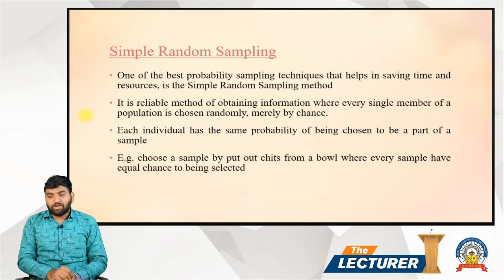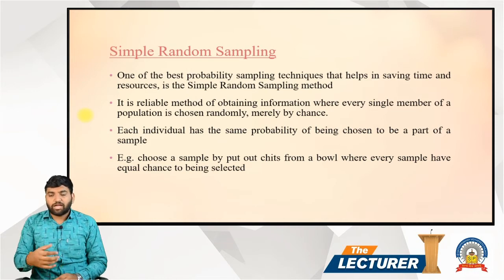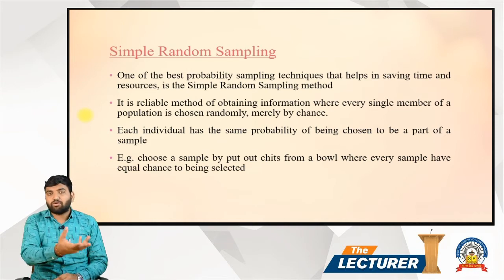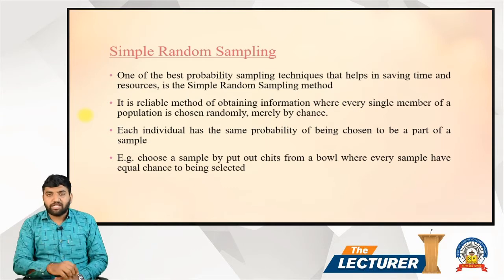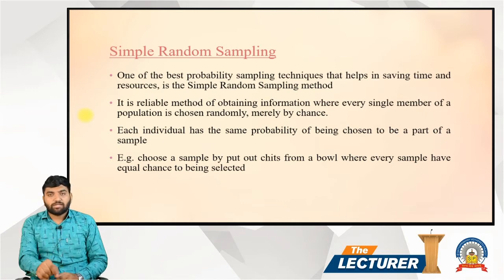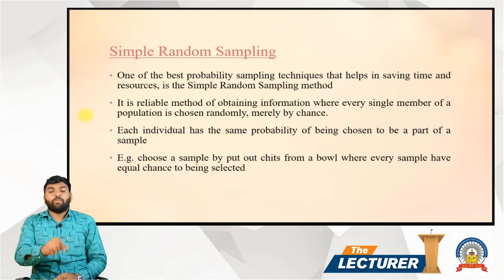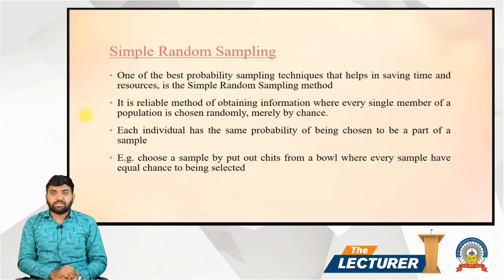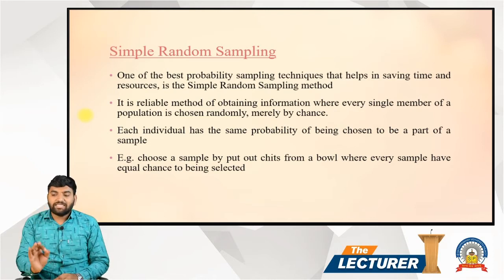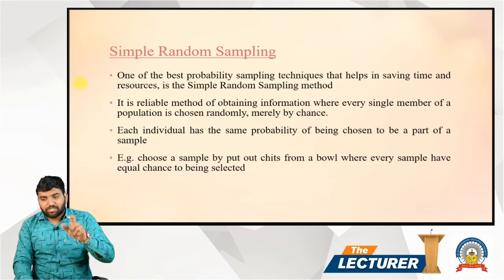Think of it as pulling chits from a bowl where every sample has an equal chance of being selected. You put all names from a population into a bowl and randomly choose from them — everyone has an equal chance. Simple random sampling is very low cost and saves time and resources.